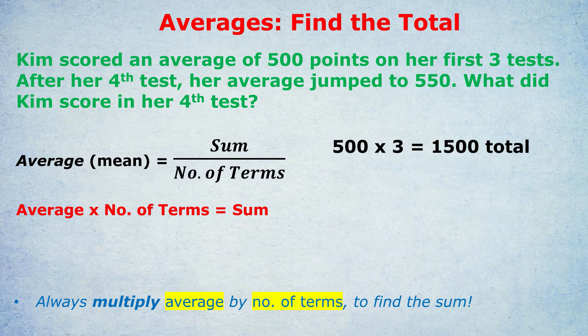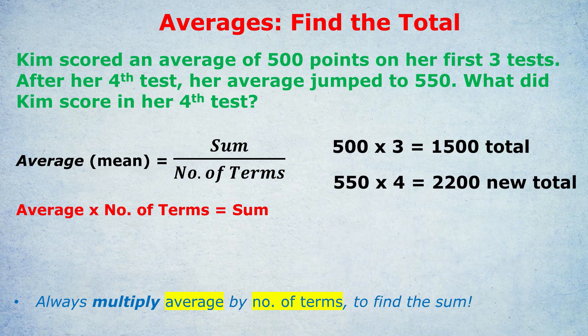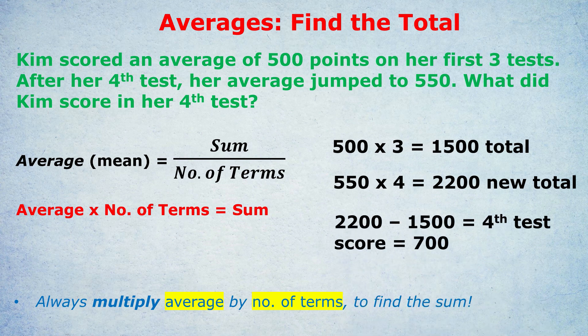But then she takes a fourth test and her average jumps to 550. That's the new average. So can you tell me the new total? We would do the average 550 times the number of terms which at this point is now four because she's done four tests and that would give us the new total. 550 times four is 2200 and that's the new total. And then all we have to do is the new total minus the old total to find out what she got on that fourth test, which was 700.